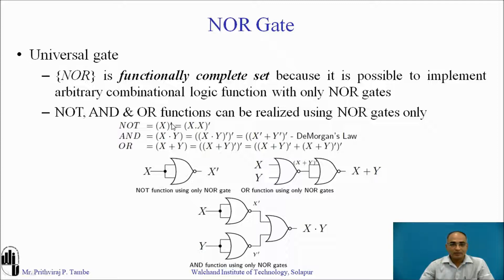You can consider it as (x + x)̄. If you visualize this expression in terms of a NOR gate, you will realize that x is applied as input to both inputs of the NOR gate, so at the output you have (x + x)̄, which is nothing but x̄.